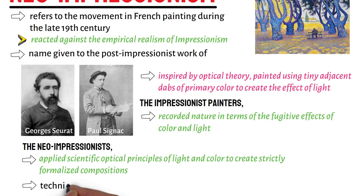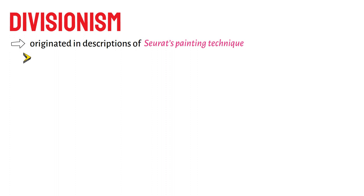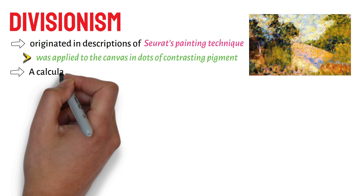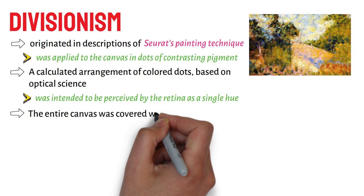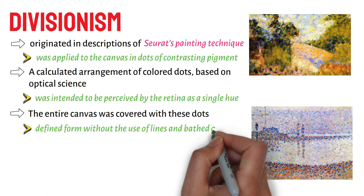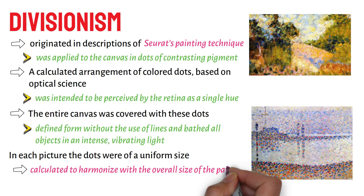This technique is called Divisionism. The term originated in descriptions of Seurat's painting technique, in which paint was applied to the canvas in dots of contrasting pigment. A calculated arrangement of coloured dots, based on optical science, was intended to be perceived by the retina as a single hue. The entire canvas was covered with these dots, which defined form without the use of lines and bathed all objects in an intense, vibrating light. In each picture the dots were of a uniform size, calculated to harmonise with the overall size of the painting.